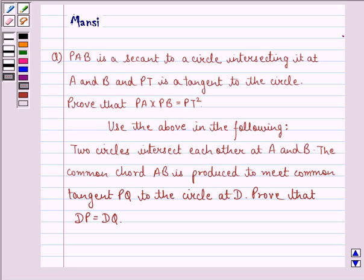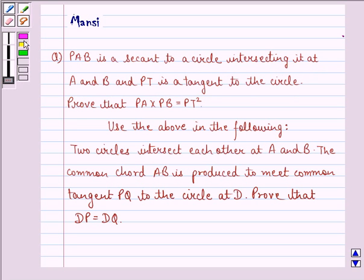Hi and welcome to the session. Let's work out the following question. PAB is a secant to a circle intersecting it at A and B, and PT is a tangent to the circle. Prove that PA cross PB is equal to PT square.